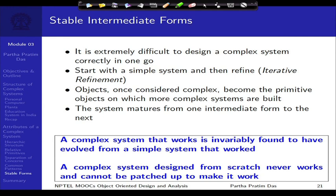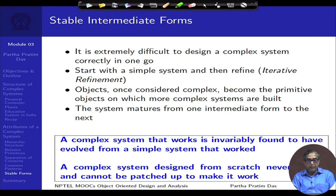The fifth and final attribute talks about stable intermediate form. It has to do with how we should tackle the development of a complex system. It is extremely difficult to design a complex system correctly in one go — if we just think we can go and design a complex system from scratch, we will inevitably face failure. What succeeds is starting with a simple system, then refining it, adding more complexity, and then refining again. This approach is typically called iterative refinement.